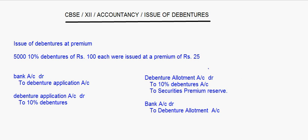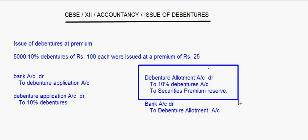In the debenture allotment entry, this is where the premium is coming. If the premium is charged with the application, then it would come in the application entry. If the question specifically says that the premium is charged with the application money, then it will come with the application entry; otherwise, it is presumed that it is taken along with the allotment money only.